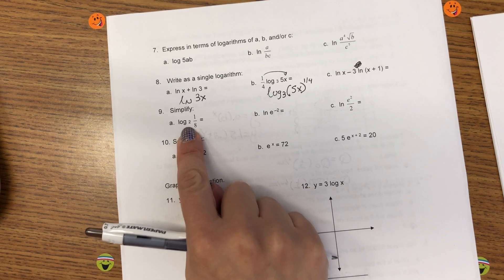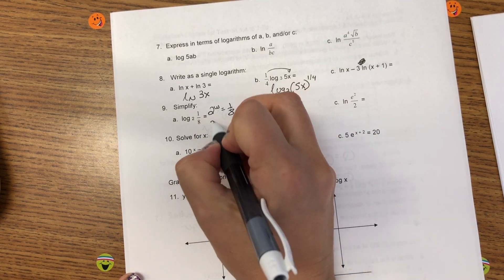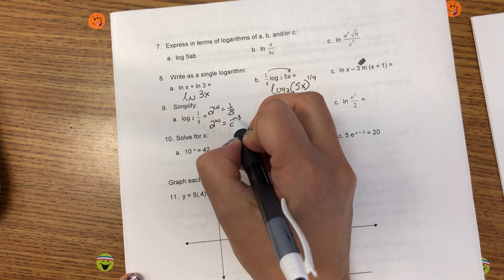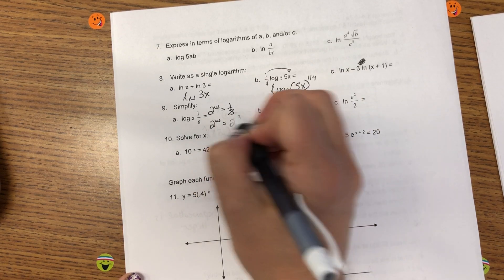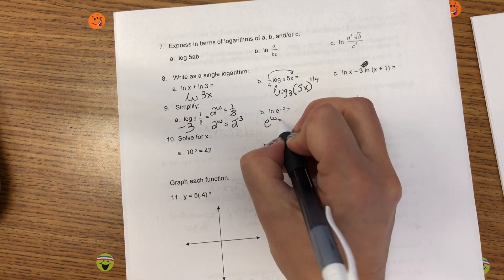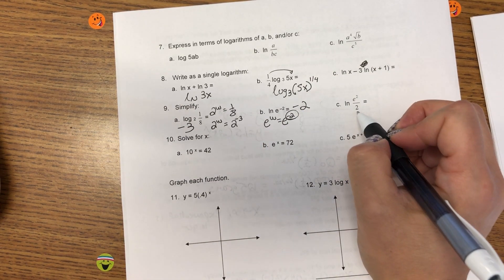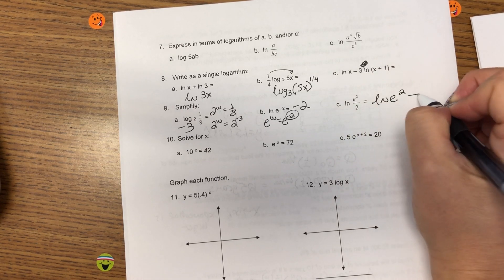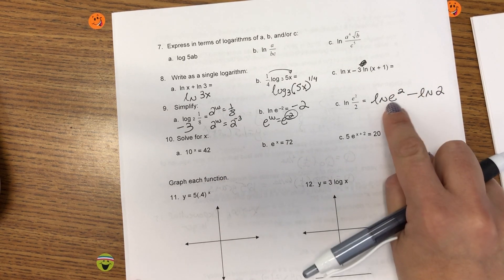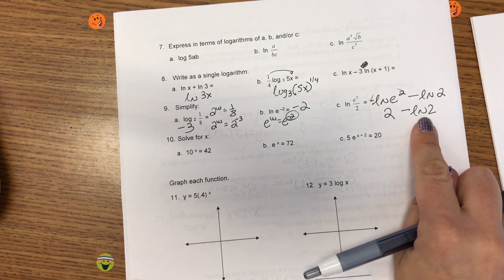Okay. Simplify. A is saying, 9a, 2 to what power is 1 eighth? Well, I can make the 1 eighth into 2 to the third. But because it's in the denominator, it's a negative 3. So, the what power is negative 3. So, the answer to a is negative 3. B is saying e to what power is e to the negative 2. Well, that's just negative 2. And I cannot do c until I use my properties of logarithms to separate the argument. Now, this, the 2 can become the coefficient. Ln of e is 1. And that is my final answer for c.